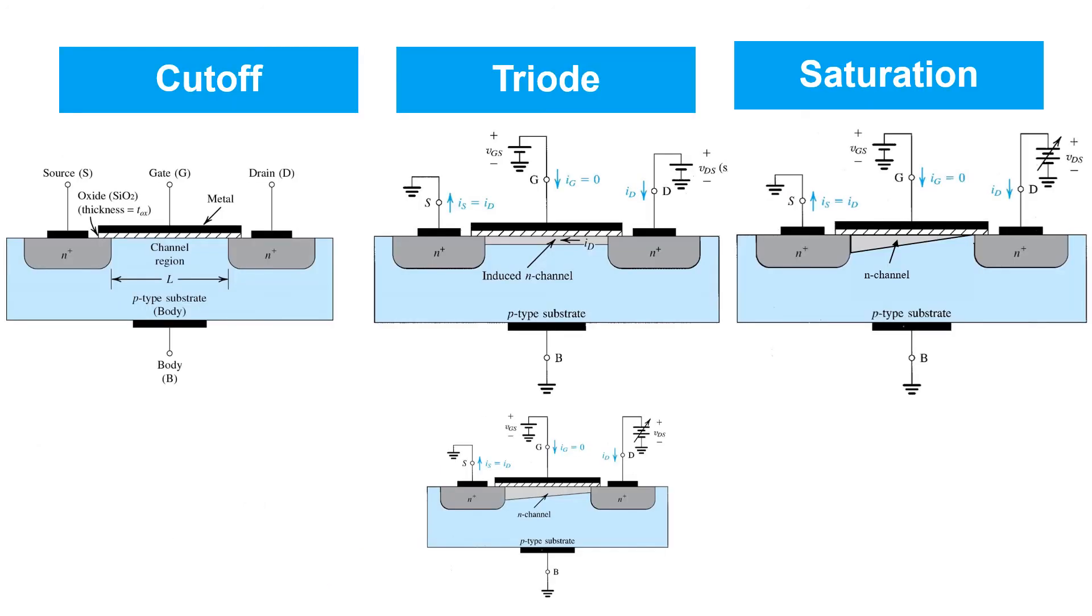So in summary, the MOSFET has three modes of operation that we're interested in. With no gate source voltage applied or a gate source voltage applied below the transistor's threshold voltage, the source and drain are insulated from each other, and no channel region is present and no current flows.